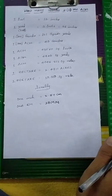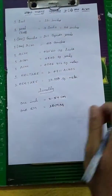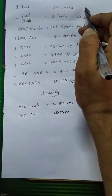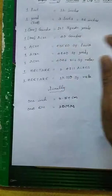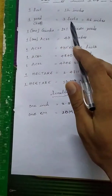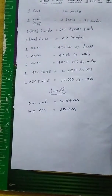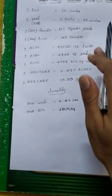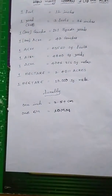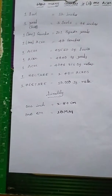How many Guntas is 1 Acre? 1 feet is equal to 12 inches. 1 yard, means Gajam, is equal to 3 feet, which is 36 inches. 1 gunta means 121 square yards. 1 acre is equal to 40 guntas.